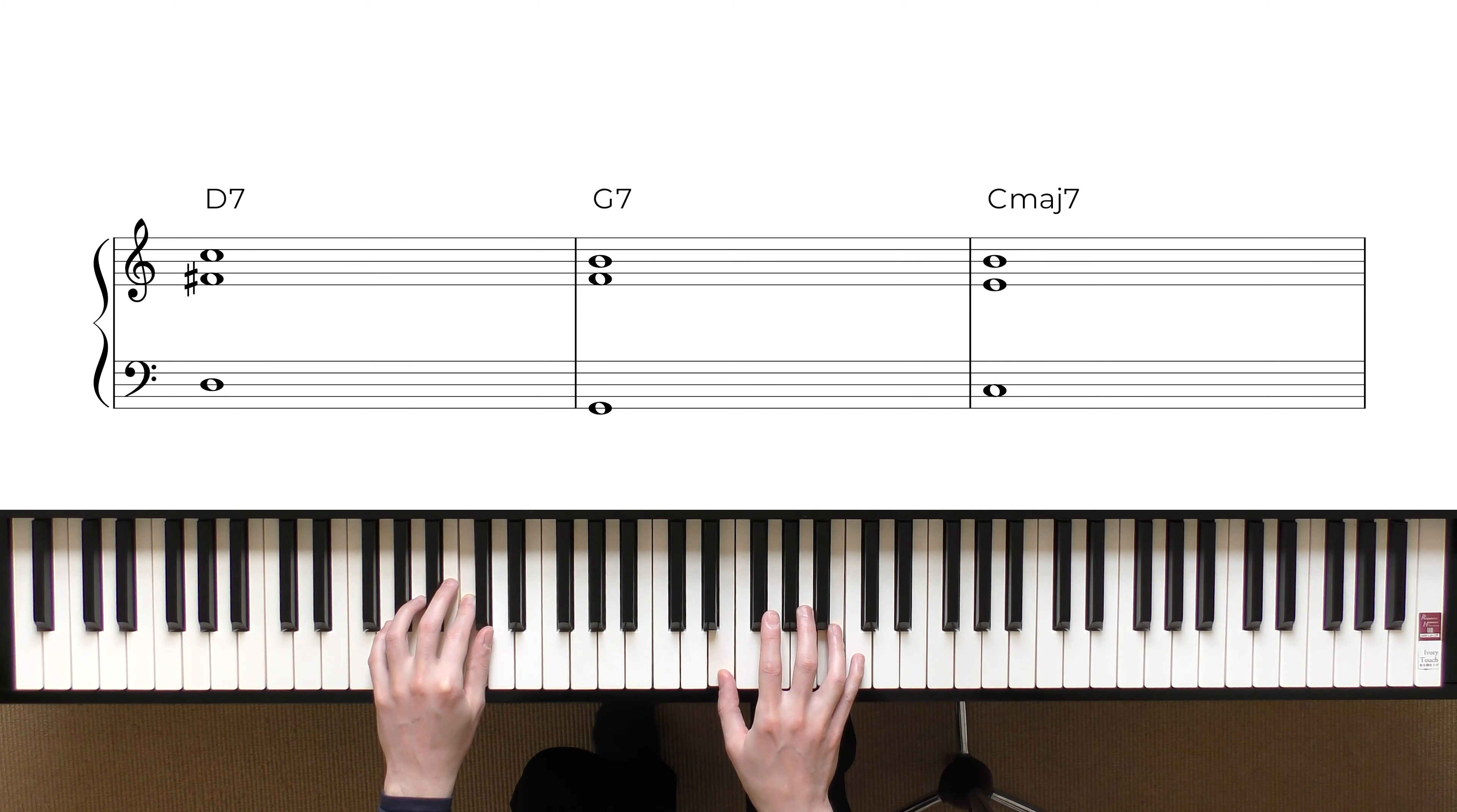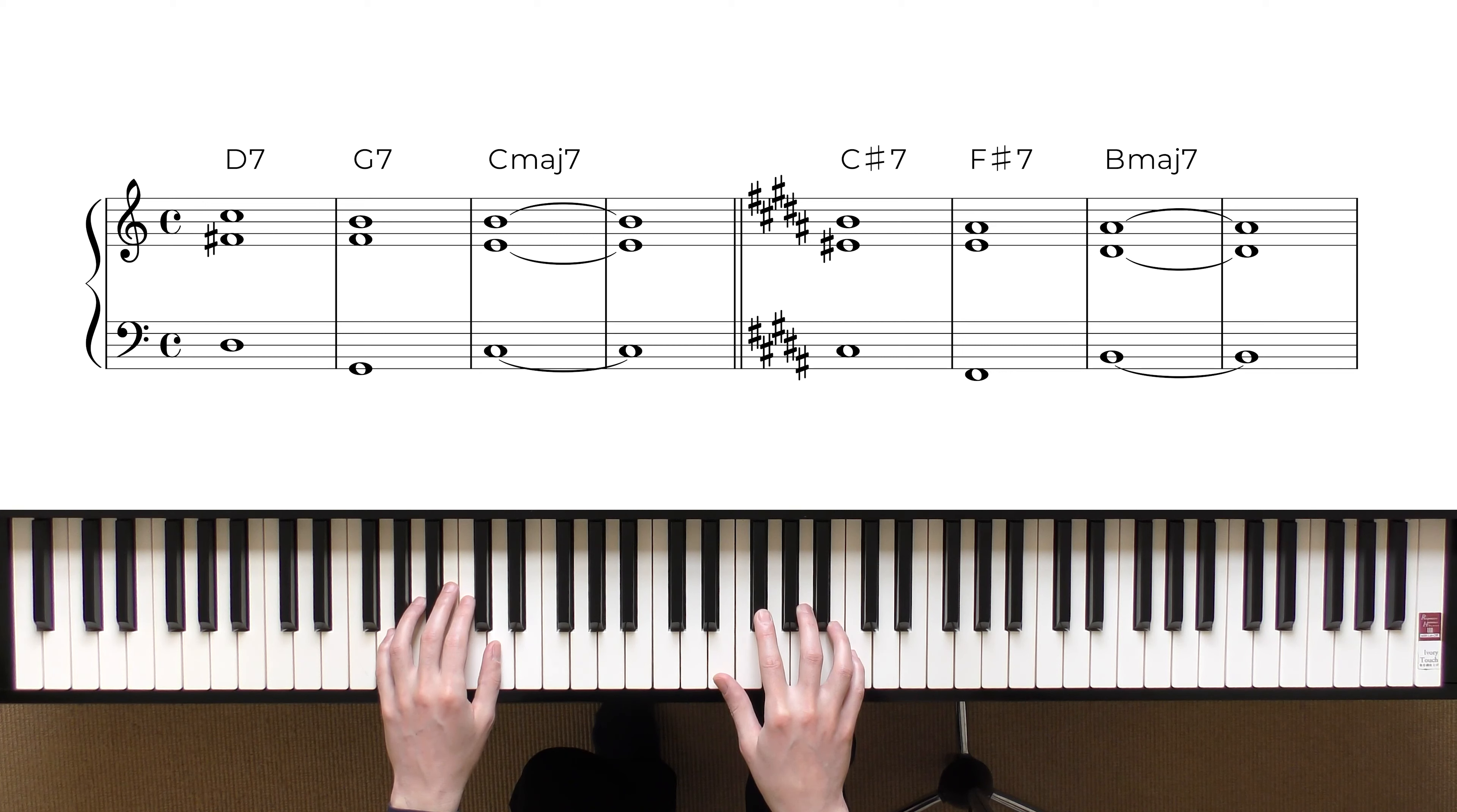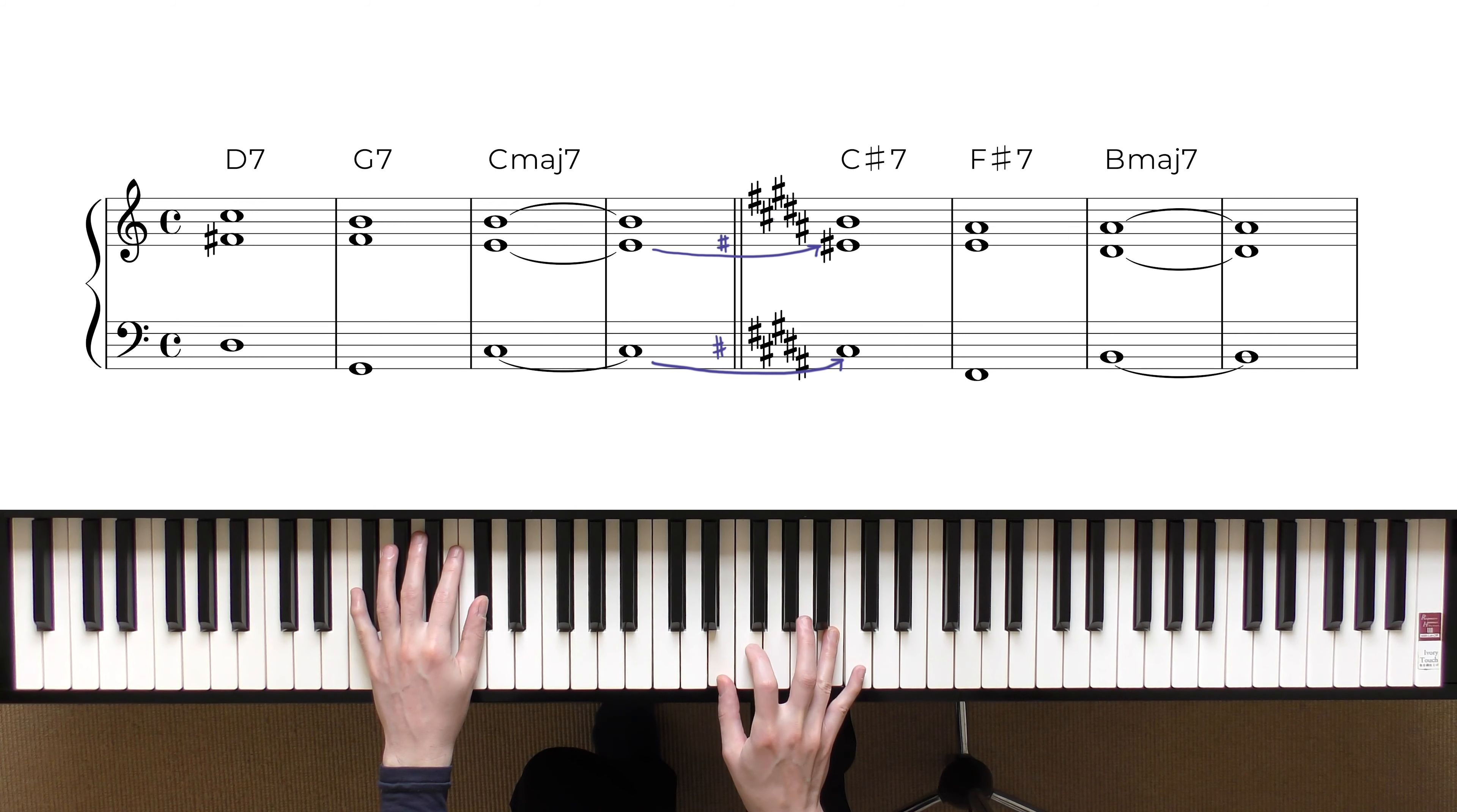And then resolves again in the tonic in the same way as before. So, if we do this in all keys like we did before, we just need to do exactly the same. We move the root, but now we need to move also the 3rd to make it dominant.